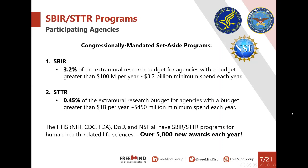The SBIR and STTR programs are congressionally mandated set-aside programs. A percentage is allocated from agencies with a budget above a threshold per year. For SBIR, about 3.2% of the extramural research budget at agencies with budgets greater than $100 million per year is allocated — that's almost $3.2 billion minimum spent each year. For STTR, it's 0.45% of agencies with a budget greater than $1 billion per year — almost half a billion dollars minimum each year.